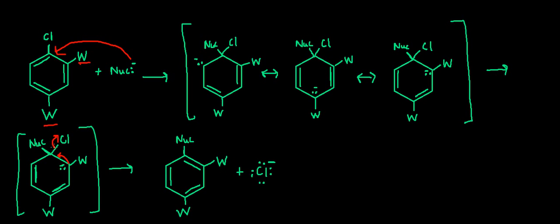The leaving group will then take a pair of electrons and leave at the same time. This extra electron pair will form a new double bond, and what remains is the nucleophile taking place of the leaving group, in this case chlorine, and the aromatic stability of the ring is restored.